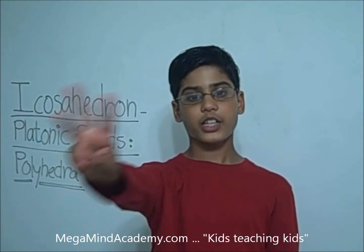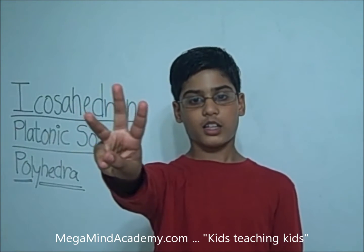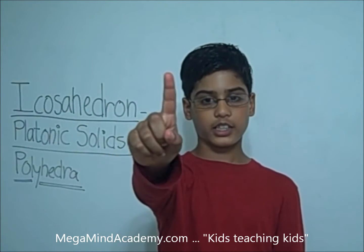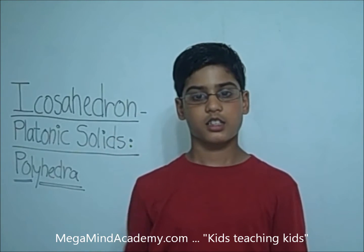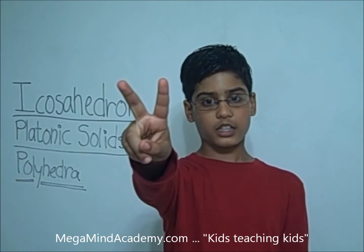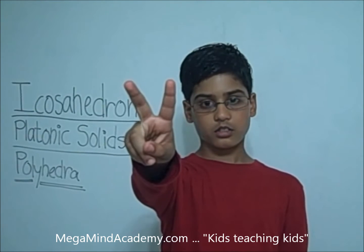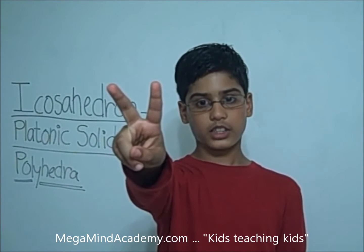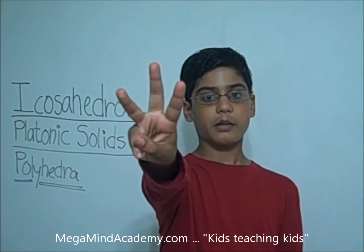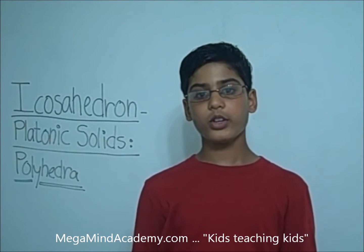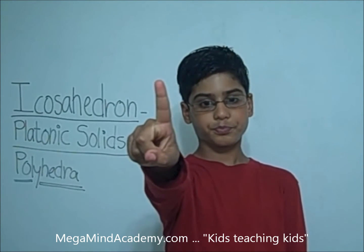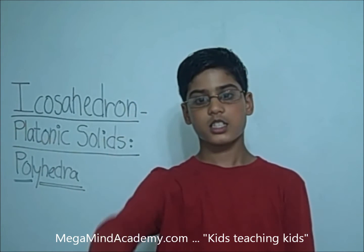There are three types of polyhedra. The first one is platonic solids. The second one is prisms. And the third one is pyramids. Today we are going to learn about the first one, platonic solids.